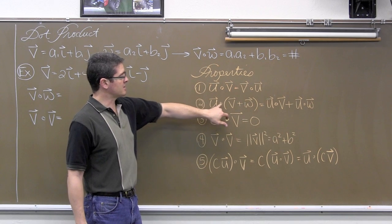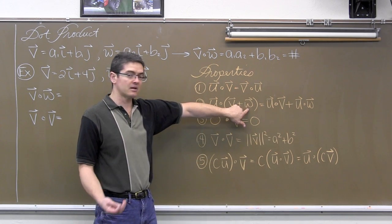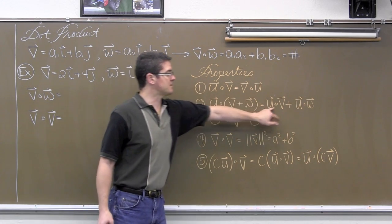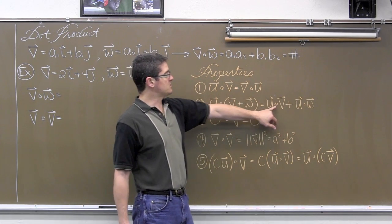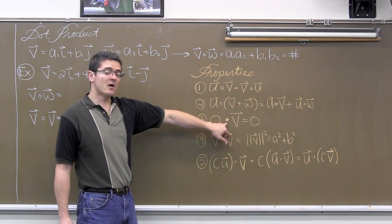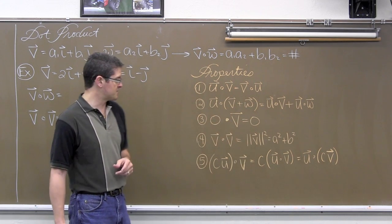If you are taking the dot product of a vector and the resultant of two other vectors being added together, you can basically distribute that dot product through the parenthesis. If you do the dot product between the zero vector and any other vector, you will get a value of zero.